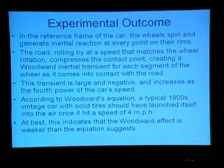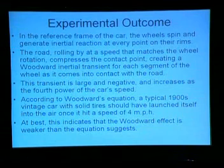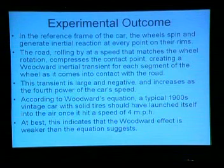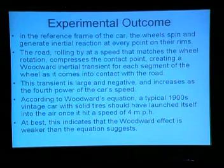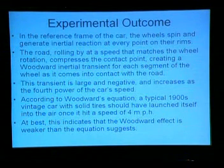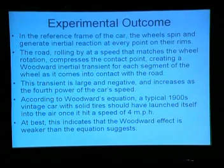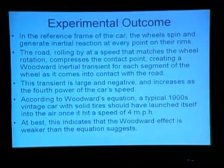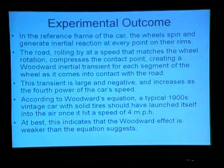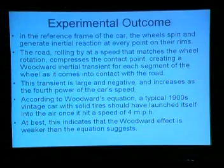This transient is large and negative and increases as the fourth power of the car's speed. According to Woodward's equation, a typical 1900s vintage car with solid tires should have launched itself into the air once it hit a speed of 4 miles per hour. At best, this indicates that the Woodward effect is weaker than the equation suggests, which in fairness does correspond to some of the results Woodward has gotten — they've noted a smaller inertial transient than the equation written at face value.